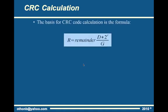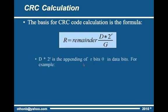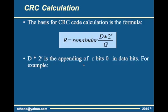CRC calculation is based on obtaining the remainder of a division, denominated R here. We divide D multiplied by 2 to the power R over G. D multiplied by 2 to the power R is represented by appending R bits of 0 to the data bits.